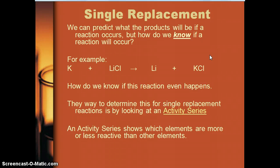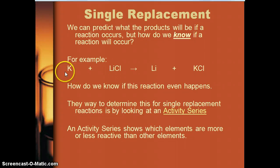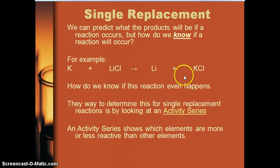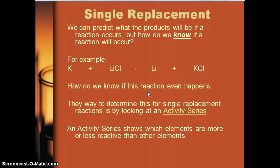What we're going to do is look at not just what products there will be, which is what we've been looking at for the last several days, but how do we know that a reaction is going to happen. For example, here we have potassium and lithium chloride. Potassium is a metal ion with a positive charge, and lithium is also a metal ion with a positive charge. The way we determine this for a single replacement reaction is we look at an activity series.